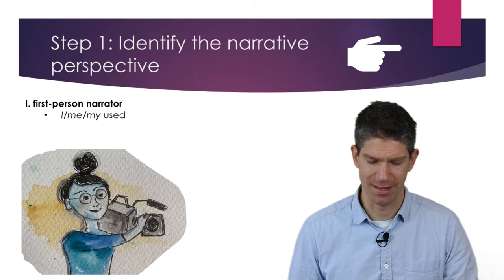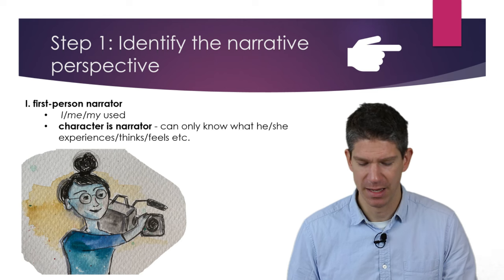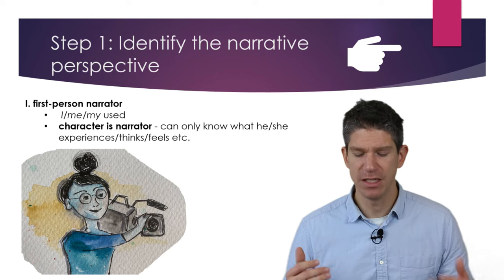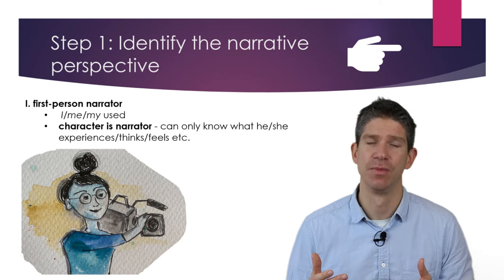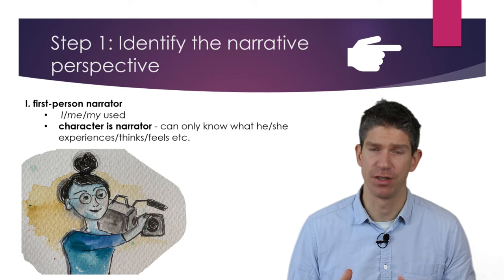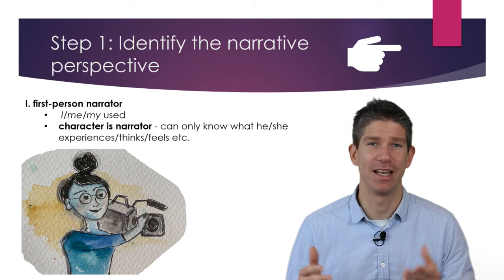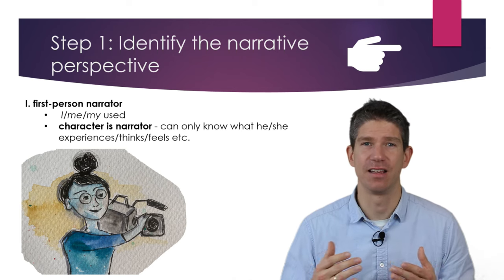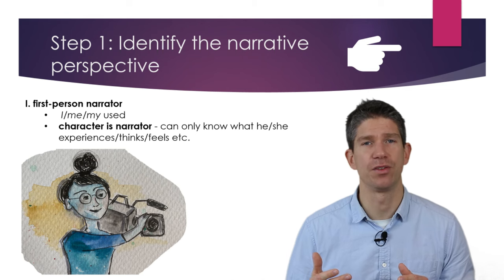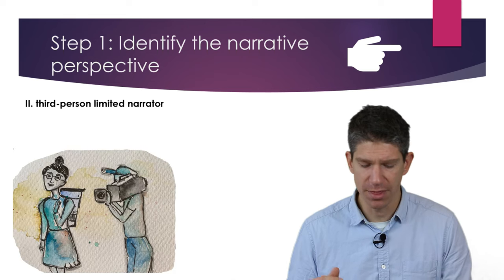The first person narrator is called that because first person singular pronouns are used — I, me, my, etc. — and the character is the narrator at the same time. A character in the novel is telling us the story, which means we can only know what this character knows, see what they see, and feel what they feel. I like to compare this to a camera perspective: it's as if somebody is holding the camera at eye level, where the eyes are the lens and the ears are the microphone. We cannot leave this perspective or have an outside view.